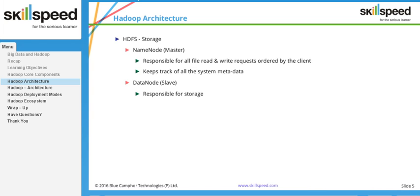When you copy data to a Hadoop cluster, the NameNode is the master daemon that talks to the DataNodes and returns a list of DataNodes where you can store the data. Every DataNode offers storage, but some may be full, overutilized, or underutilized. To avoid such problems, the NameNode intervenes and tells you exactly which DataNodes to write data to.